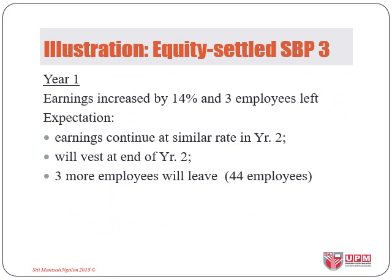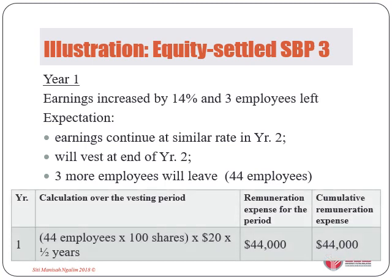In year one, earnings increased by only 14%, so the scheme will not vest this year. Three employees left, leaving 47. For the subsequent year, the company expected earnings to continue increasing by 14%, so the scheme was expected to vest at end of year two since the average earnings would exceed 13%. It was also estimated that three more employees would leave in year two, so the company would pay for only 44 employees at end of year two.